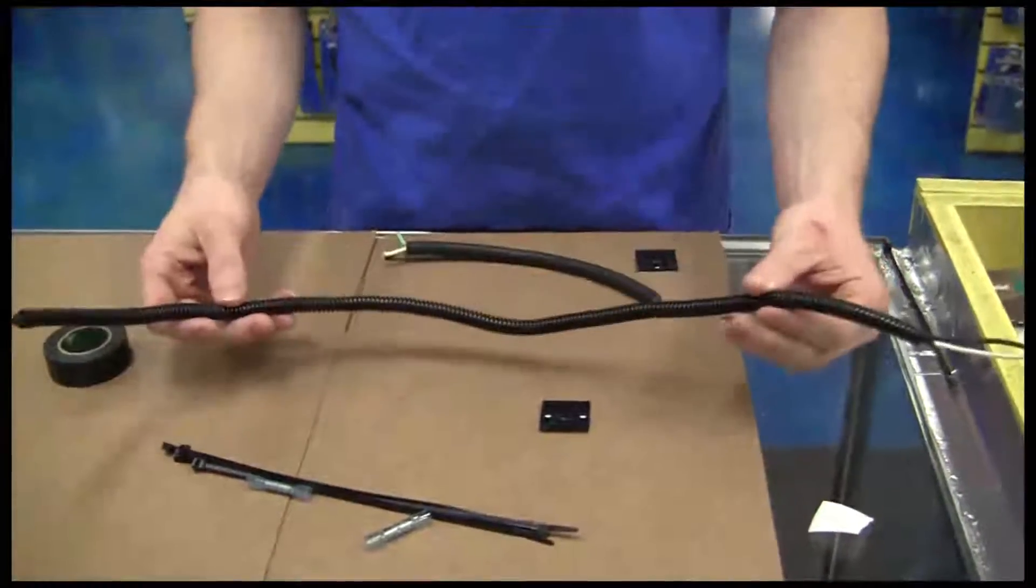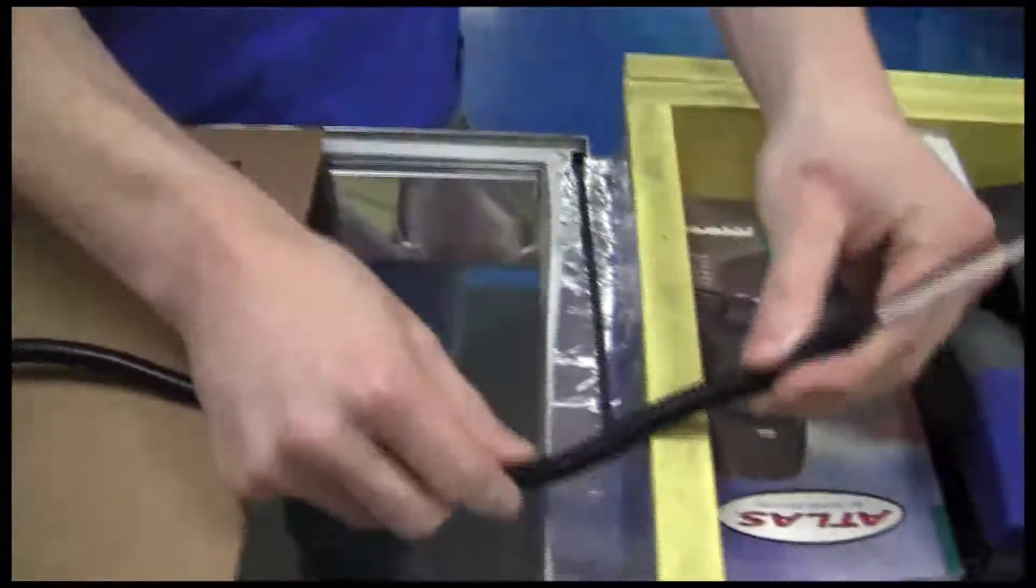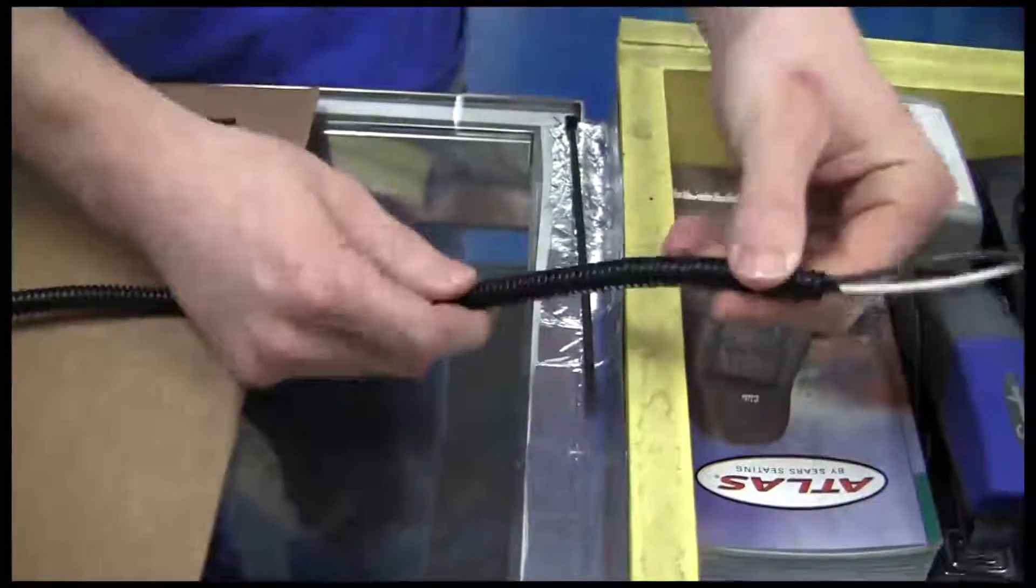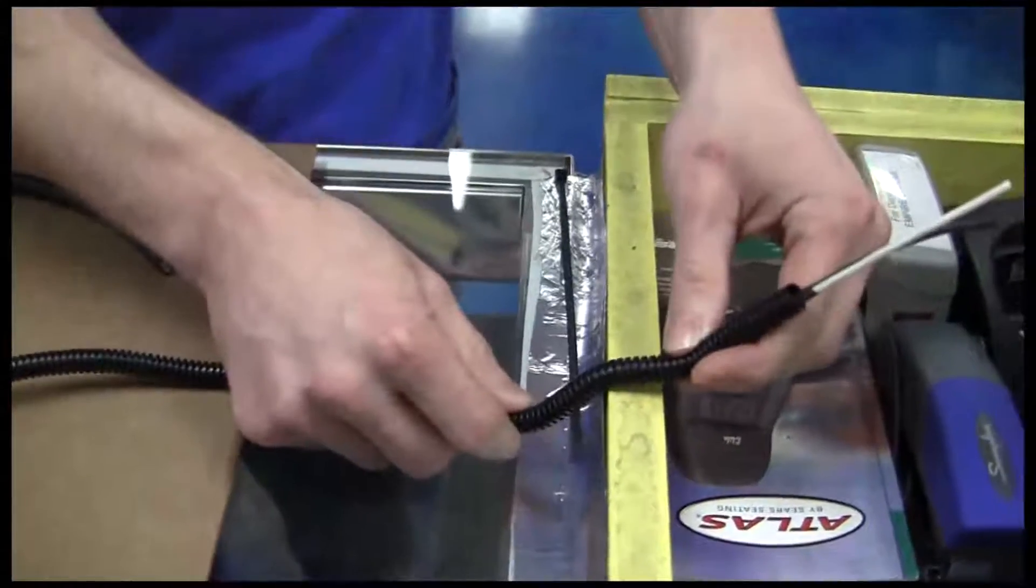All right, now that I got the wire loom on there, this wire loom is really good stuff. It will keep the wires from chafing if it's rubbing up against something. So instead of chafing the wires and shorting them all together, it will actually just chafe on the wire loom, which is a lot better.